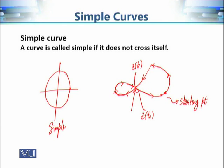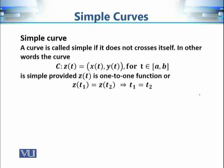A curve is not simple if it is not one-to-one. It is not one-to-one because z(t1) = z(t2) but t1 ≠ t2 — two different inputs give the same output. A curve is simple if the parameterization z(t) is one-to-one: z(t1) = z(t2) implies t1 = t2.